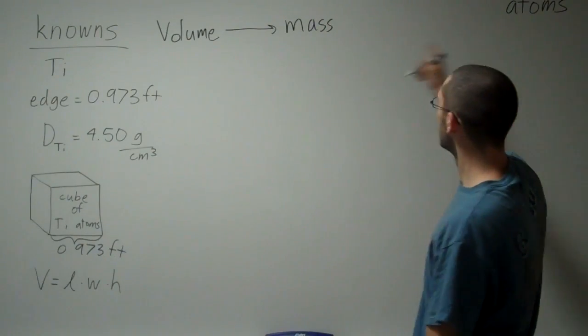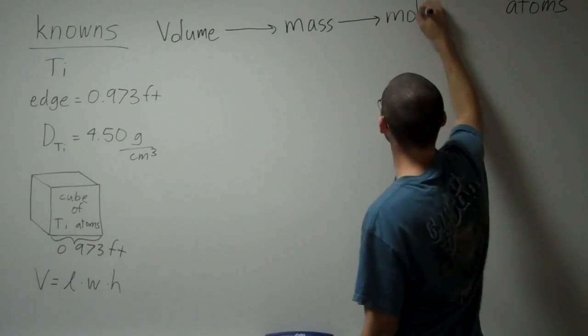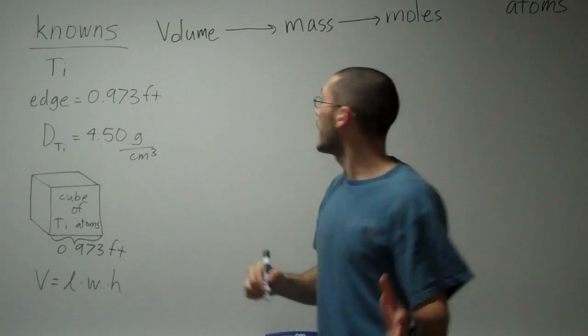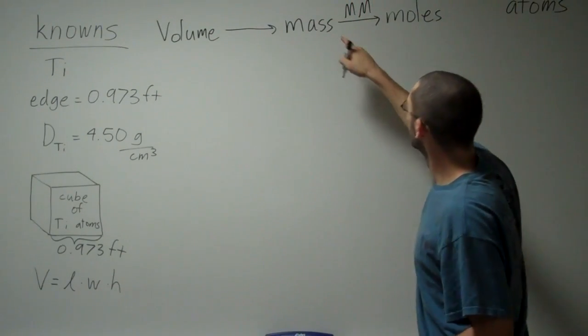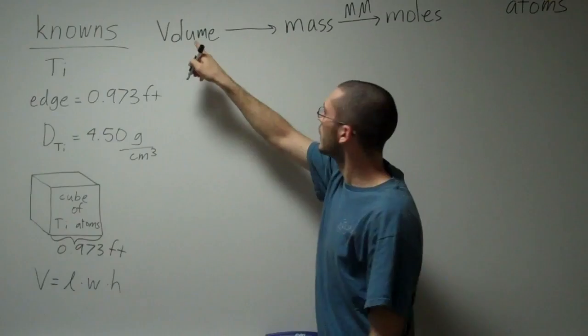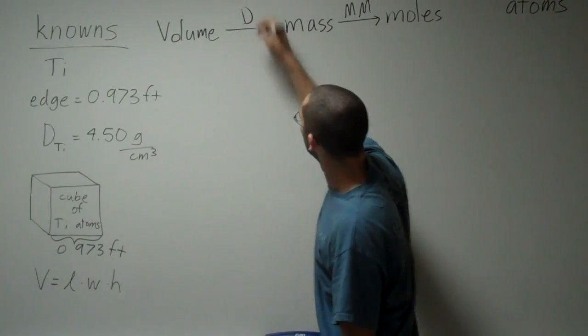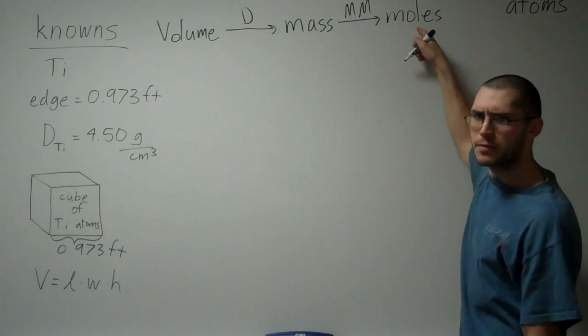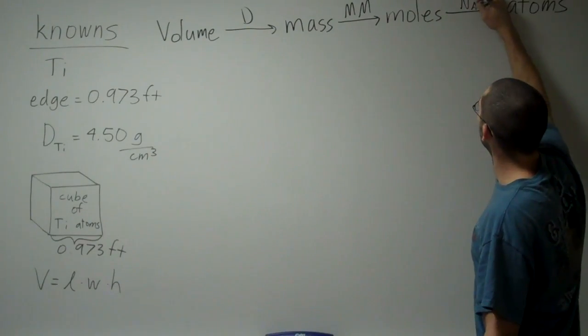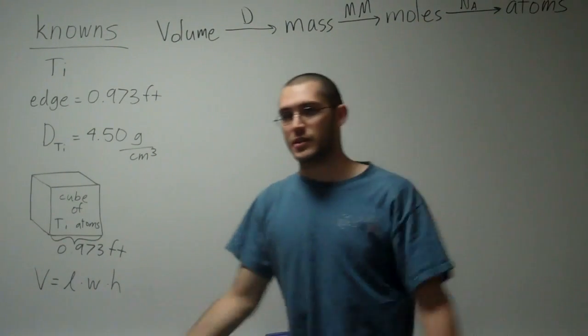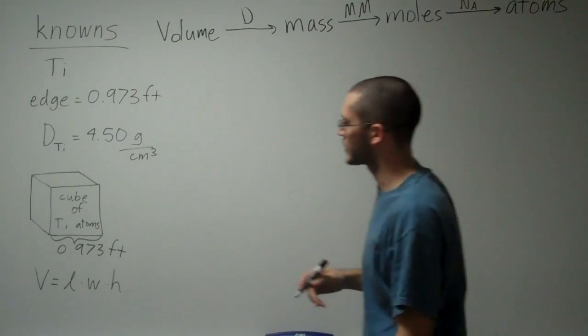I know volume now. We're going to crunch the numbers in a minute, but for now we'll just develop our plan of action. From the volume, what next can I go to? Well, I was given density. It says the density of titanium is 4.5 grams per centimeters cubed. This is a conversion between volume and mass, so I can go from my volume to how much mass of titanium is in this whole cube. If I know the mass, I could get moles of titanium through the molar mass, grams per mole of titanium. And finally, how can I go from moles to atoms? Through Avogadro's number, that's the 6.02 times 10 to the 23rd deal. So there's the plan.